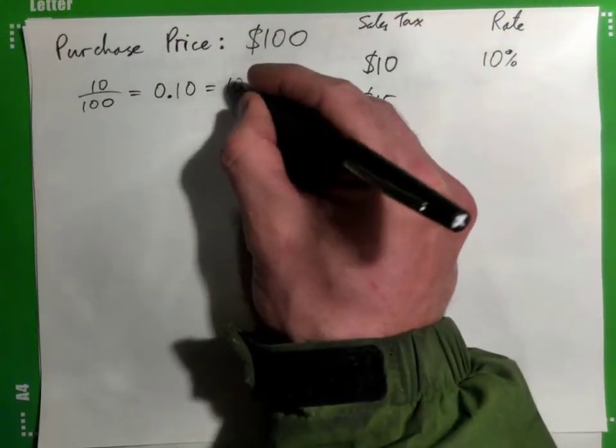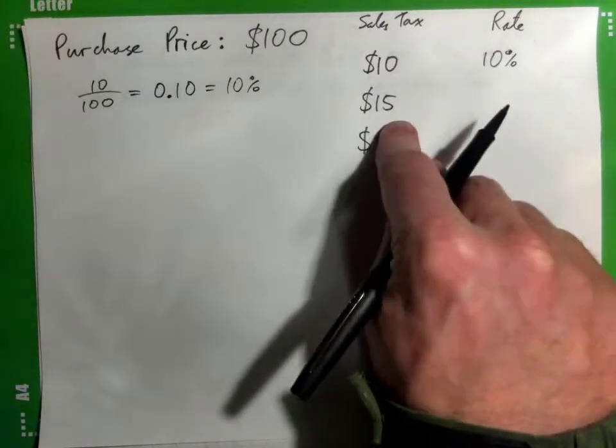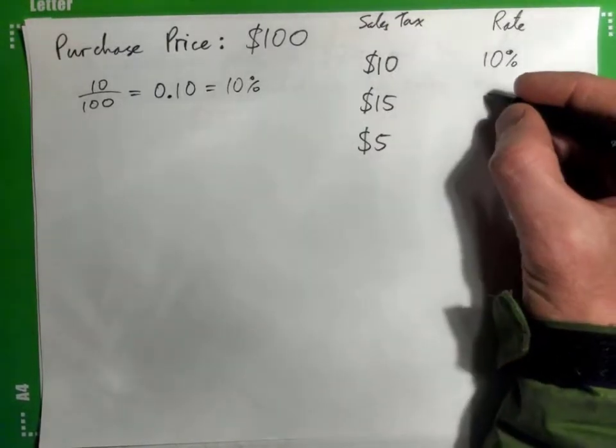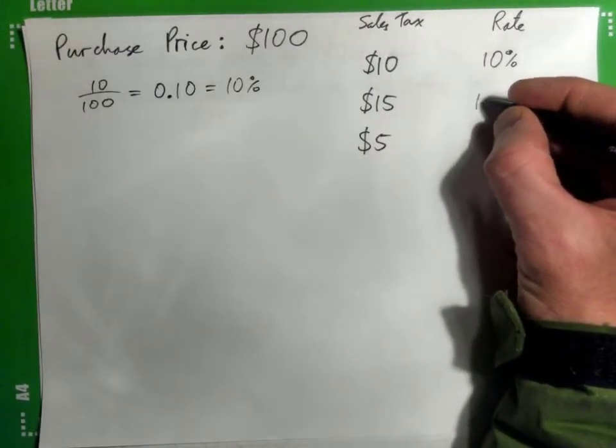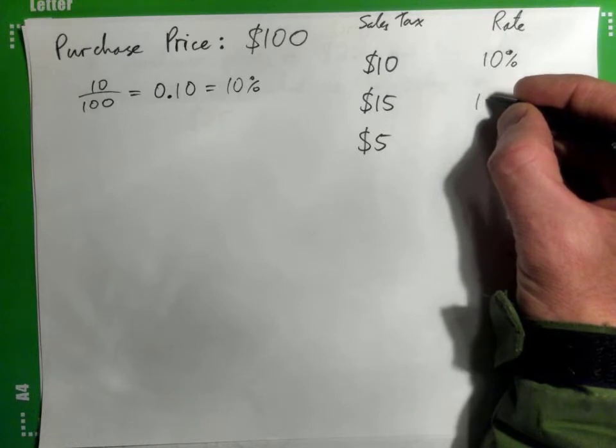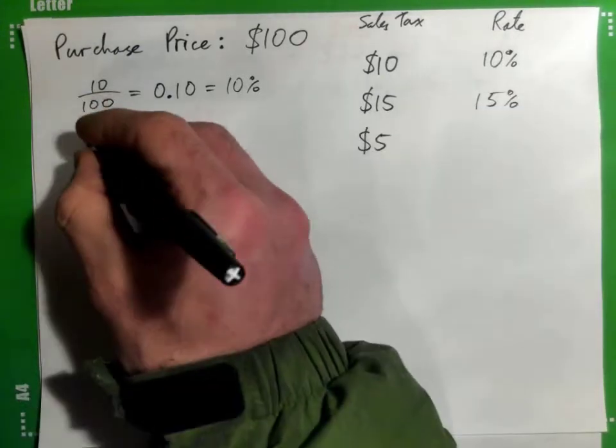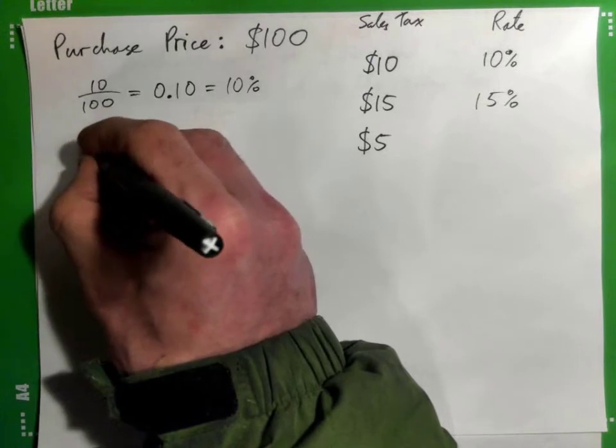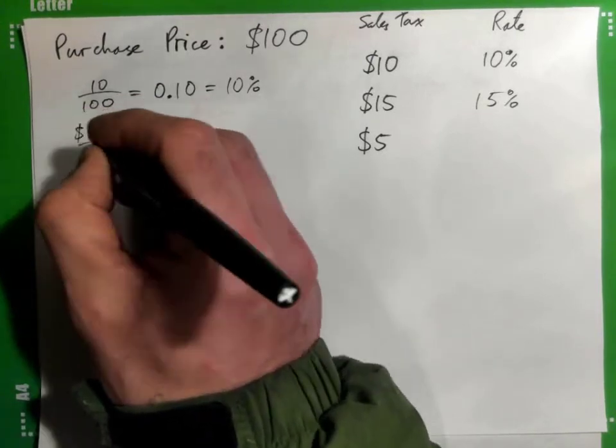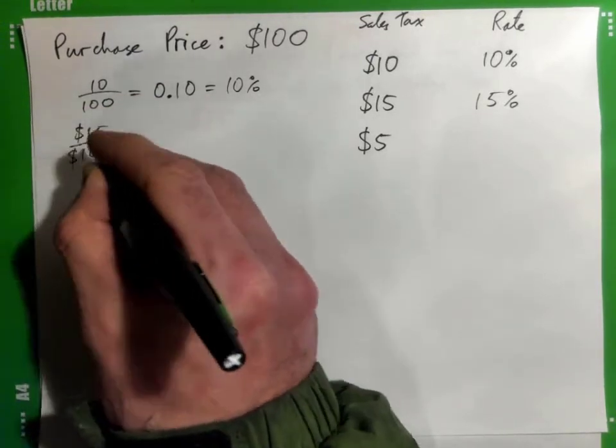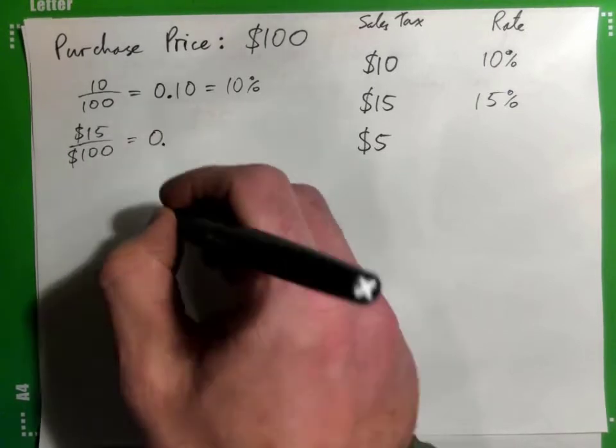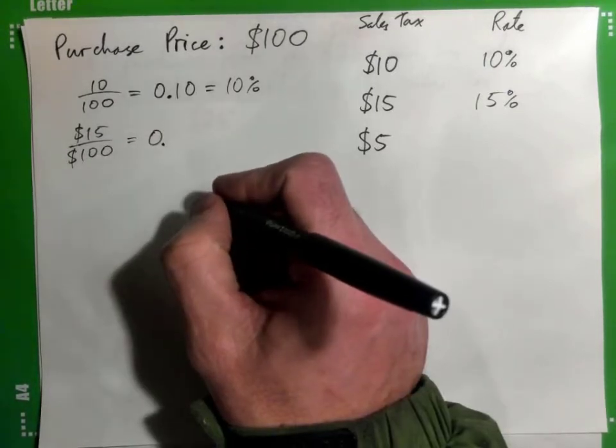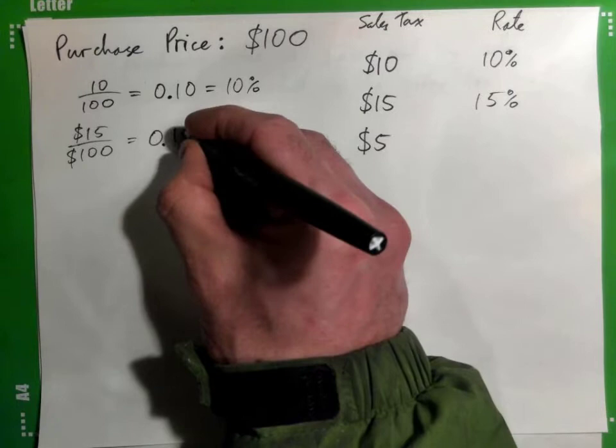So if the sales tax is $15, what's the rate? It's 15%. Why? Because 15 over 100, the $15 sales tax over $100 purchase price is 0.15.